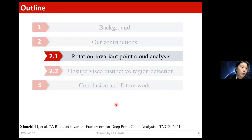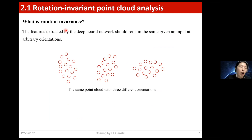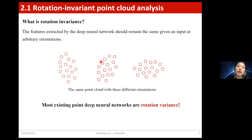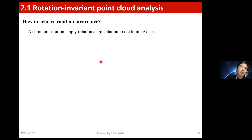Let me first explain what rotation invariance means. For a rotation invariant method, the features extracted by the deep neural network should remain the same given an input at arbitrary orientation. For example, for the same point cloud with three different orientations, the extracted features should be the same because they all represent the same object. However, most existing deep neural networks for point clouds are not rotation invariant, meaning the extracted features are very sensitive to object orientation.